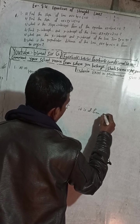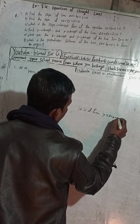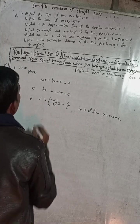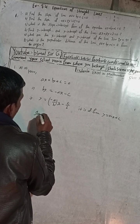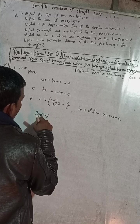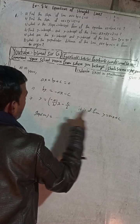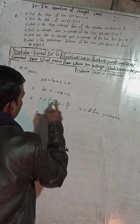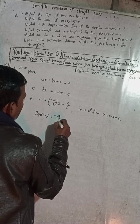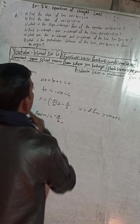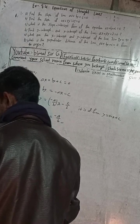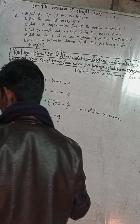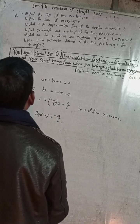It is now in the form y = mx + c. So comparing, slope m = -a/b. The answer in the book is also -a/b, so that is the correct answer. Now I will solve part (b).